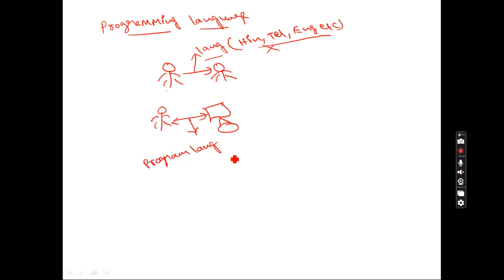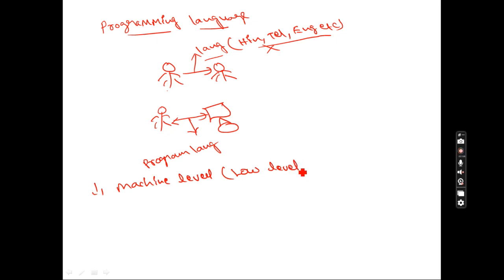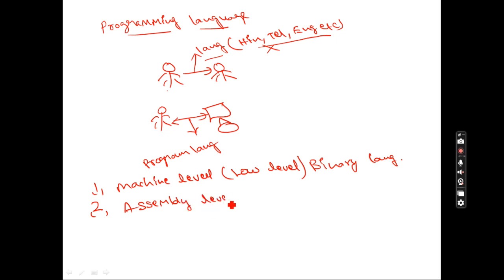Generally, there are three types of programming languages. The first is machine level language, also called low level language or binary language — please don't get confused, it has three names. The second is assembly level language. The third is high level language.